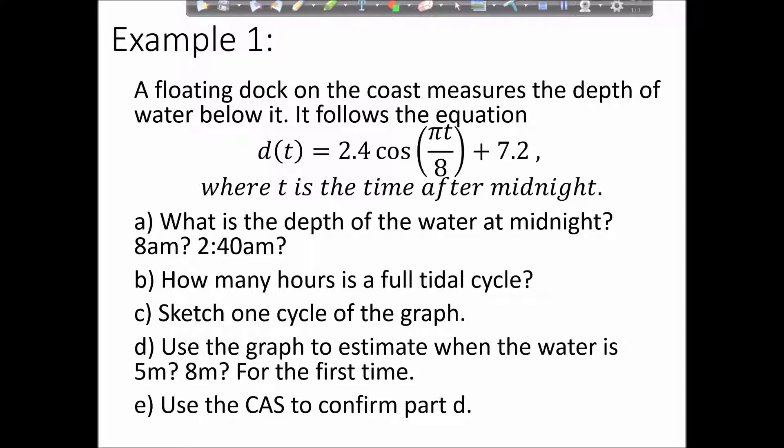So we've got a floating dock on the coast that measures the depth of the water below it. The depth follows this equation here: d(t) = 2.4cos(πt/8) + 7.2, where t is the time after midnight. We've got a vertical translation, a change in period, and a change in amplitude. We've got a couple of questions asking us for the depth at various times, how long it takes for a full cycle, to sketch that, and then use that graph to make some estimations but then confirm those with the CAS.